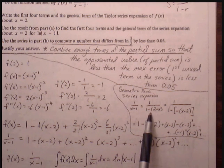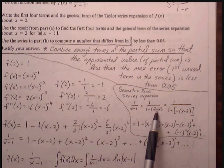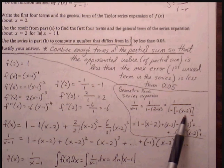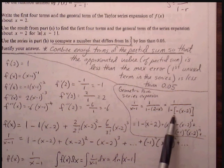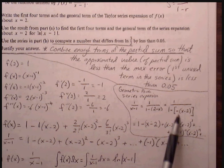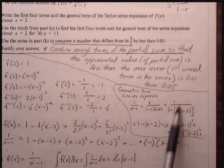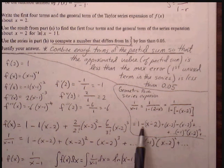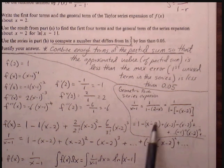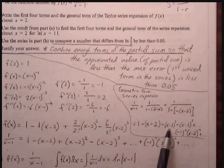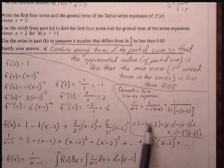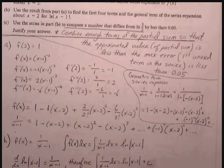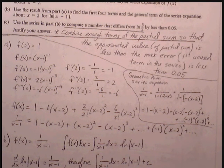What we can do is rewrite this by pulling out the negative as negative (x-2). Now we have a ratio, with the first term being 1. So: 1, then multiply each term by the ratio -(x-2), giving us: 1 minus (x-2) plus (x-2) squared minus (x-2) cubed, and so forth. That's another way we can generate the first four terms of the Taylor polynomial.